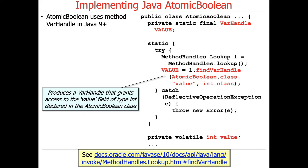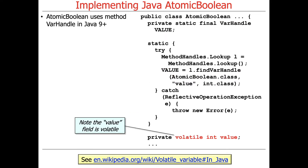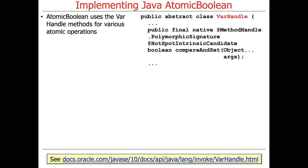If something goes wrong, we get a reflective operation exception, but hopefully nothing will ever go wrong in this case. Notice that the value field itself is volatile, which means reads and writes to it are atomic. The implementation of the various methods we're about to look at use VarHandle methods for various atomic operations. VarHandle is an abstract class, and its methods are implemented as native methods — actually implemented in C++ or C.